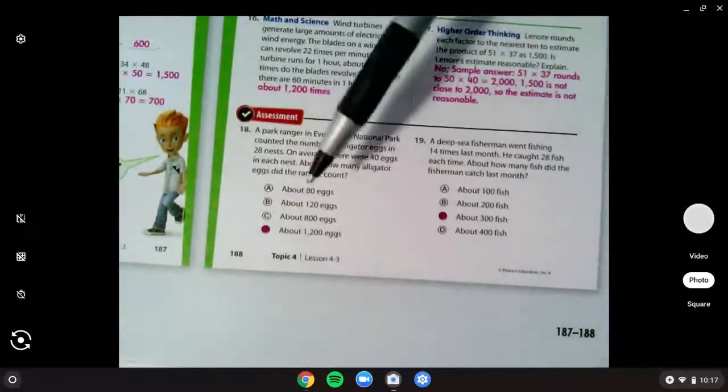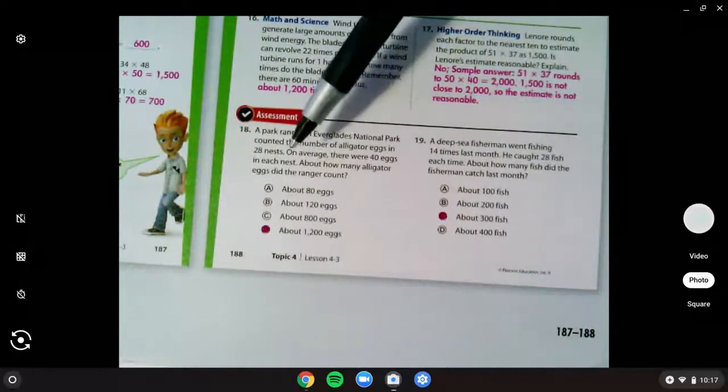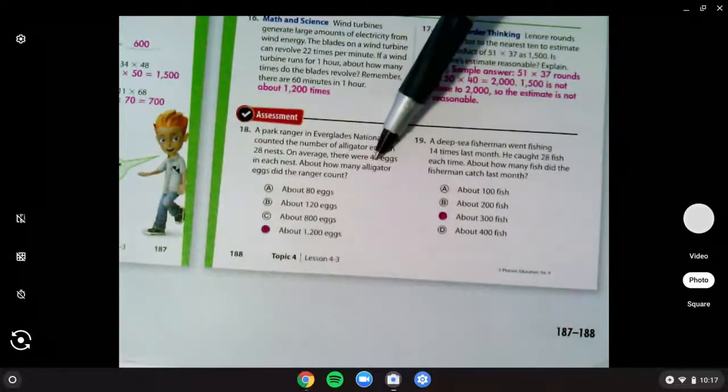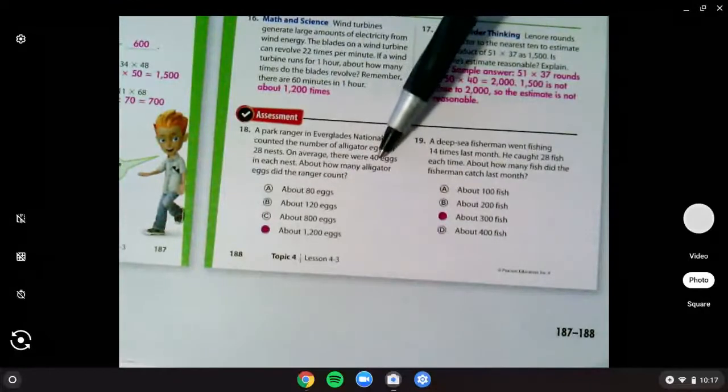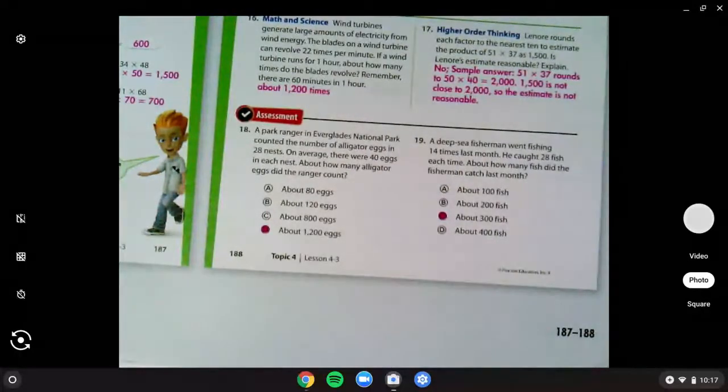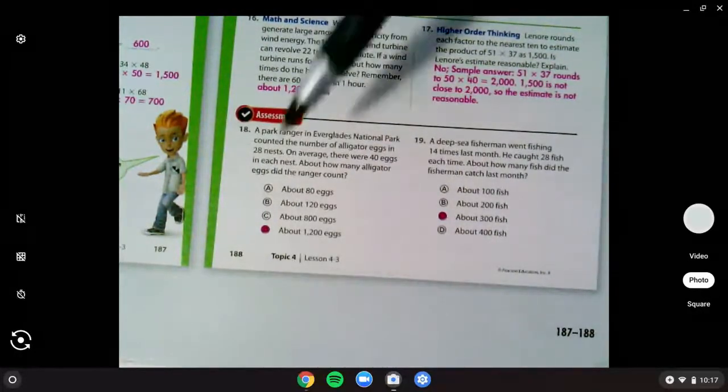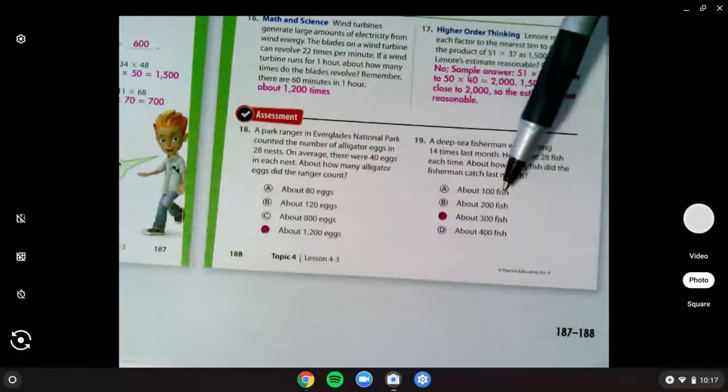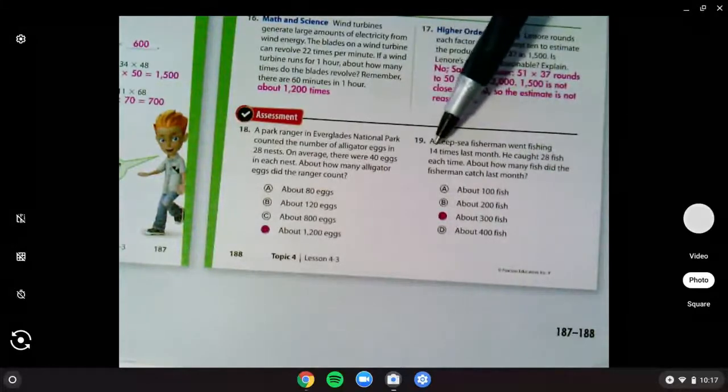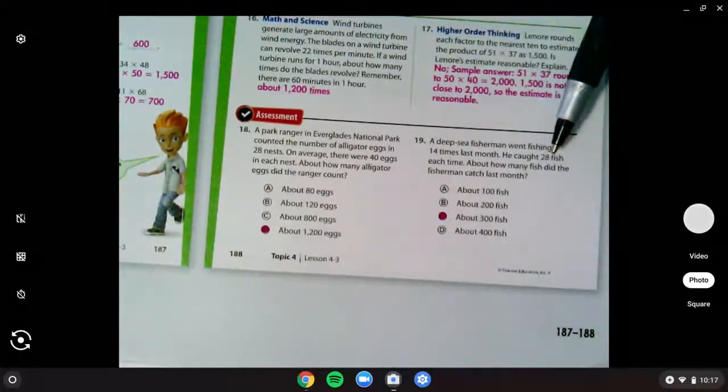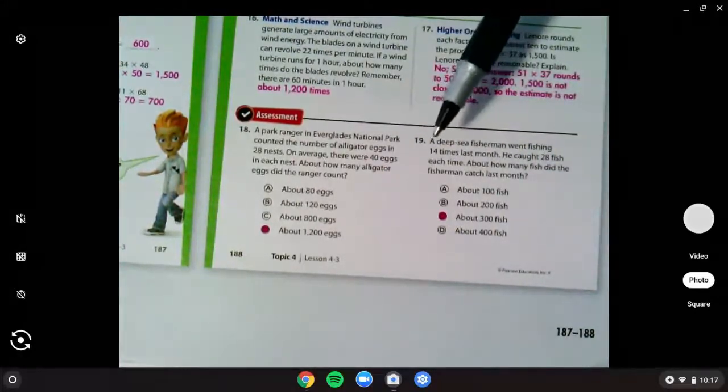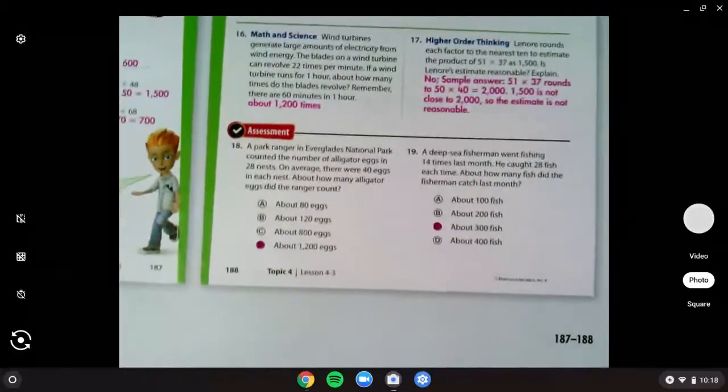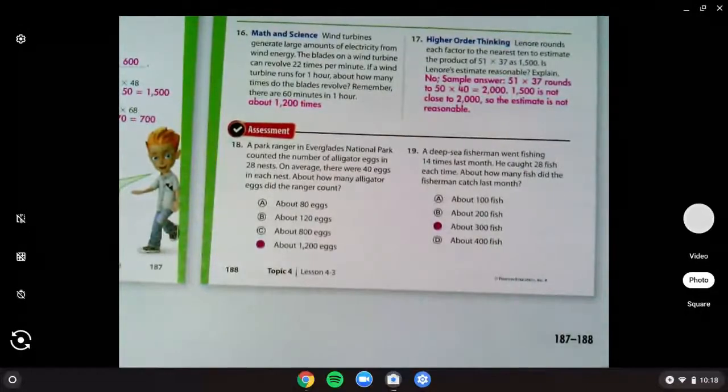And 18, you had to multiply 28 times 40, but you needed to round, and 40 was already nice and even, so you needed to round 28 up to 30. 30 times 40 would get you about 1200 eggs. And 19, you should have done 14 times 28 and rounded both numbers to be 10 times 30 to get about 300 fish.